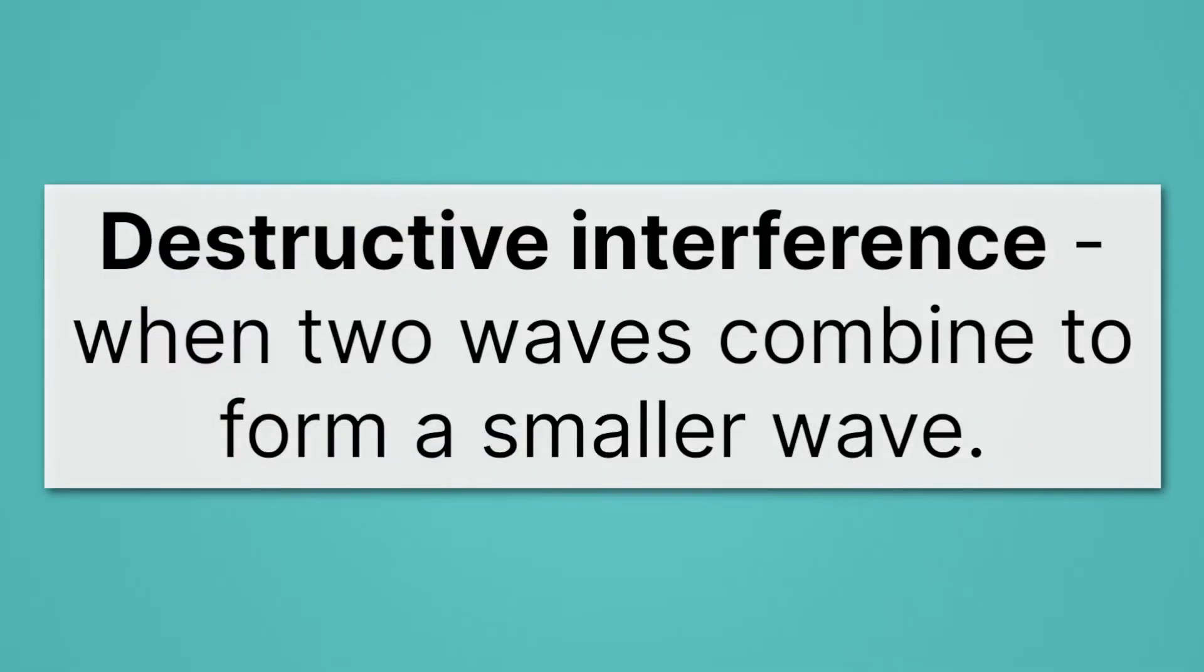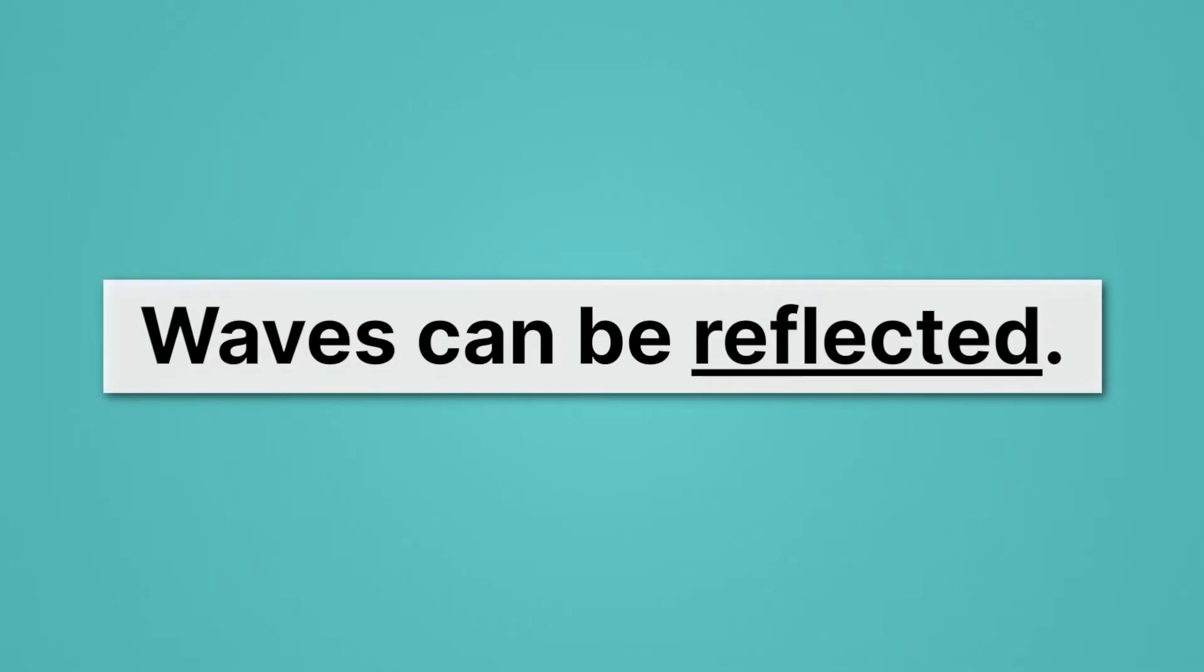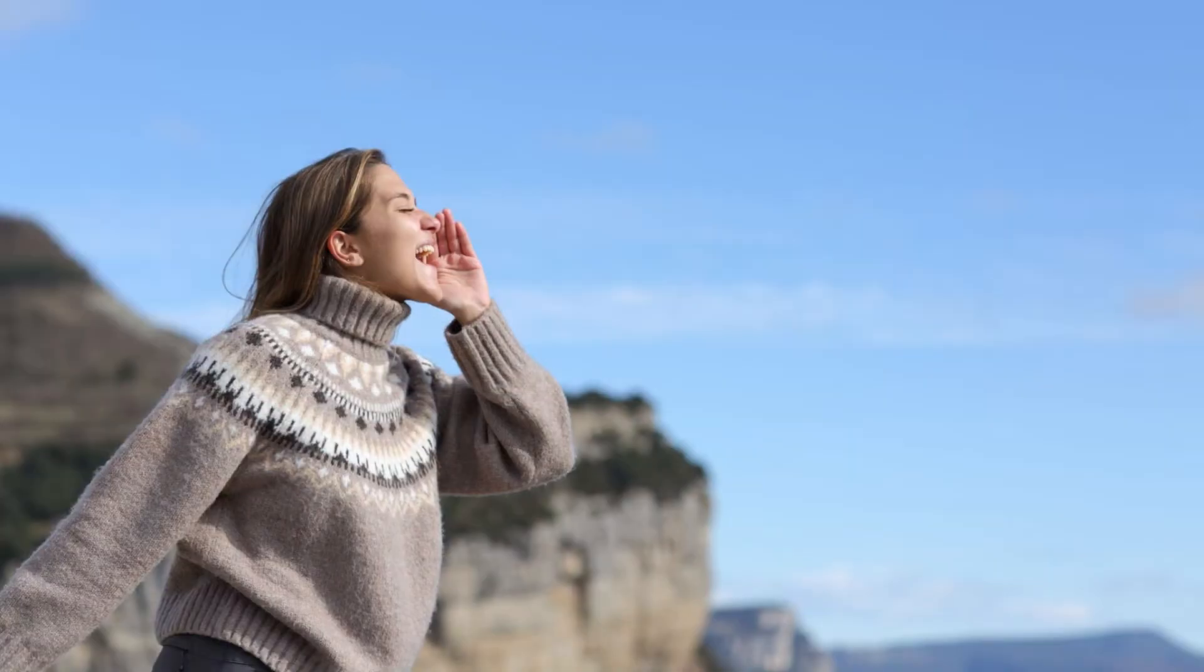That's when two waves combine to form a smaller wave or just to get rid of the wave entirely. So waves can interfere with each other. That's the first important way waves interact. But waves can also be reflected. Let me give you an example. Echoes.